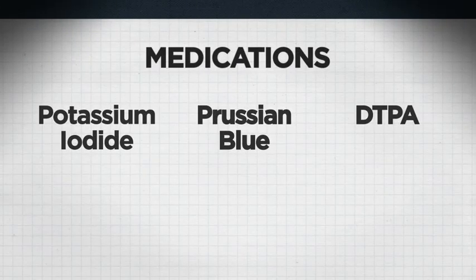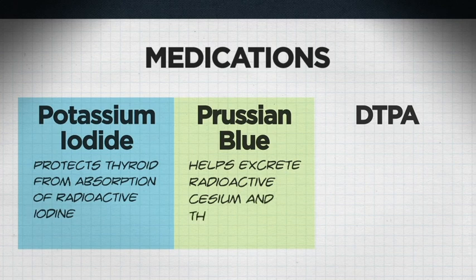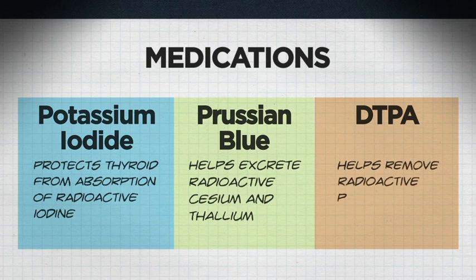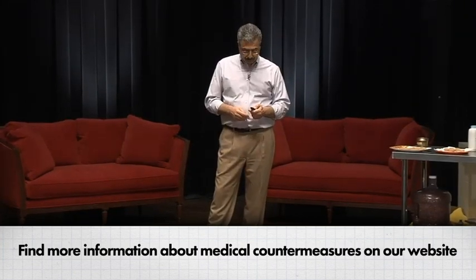There are also medications to help deal with internal contamination or limit its uptake. These medical countermeasures are very specific and have very limited application. Potassium iodide protects the thyroid gland from absorption of radioactive iodine. Prussian blue helps excrete radioactive cesium from the body. And DTPA helps remove radioactive plutonium and americium. These medical countermeasures only work on specific radionuclides and none of them protect you from external exposure to radiation or other radionuclides. You can find more information on our website. Most importantly, the most effective way to protect yourself is to limit your exposure in the first place and remove and clean any external contamination as soon as you can.